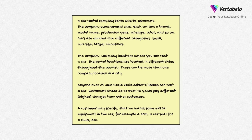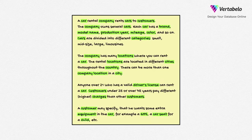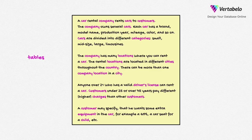Once you have the description, take a look at it and highlight all the nouns. The nouns you have highlighted fall into three categories: tables, attributes and examples.